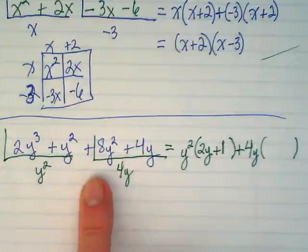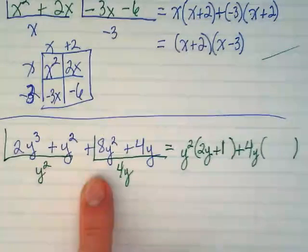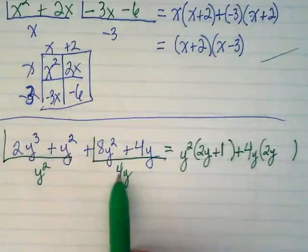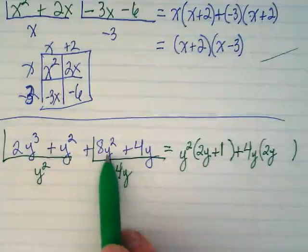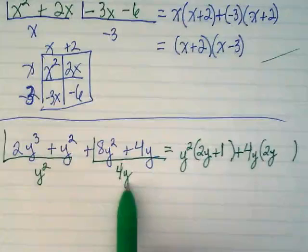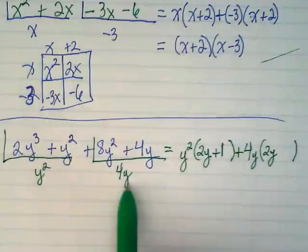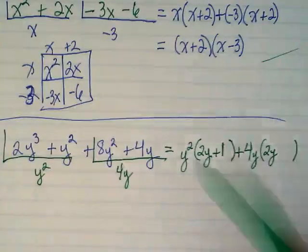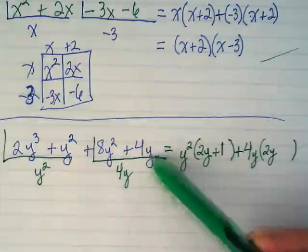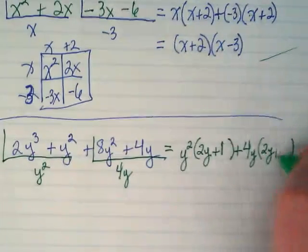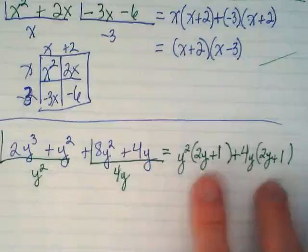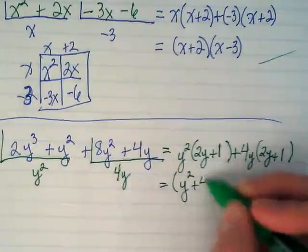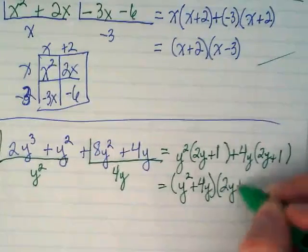If I divide 8y squared by 4y, do I get 2y? Yes. Because 8 divided by 4 is 2. Y squared divided by y is y. Like you said, it is subtraction. Those rules are still there for our exponents. What's 4y divided by 4y? 1. Oh my gosh, are you going to see my answers? There's my common factor. I can rewrite this now as y squared plus 4y times 2y plus 1. And how do we check it?